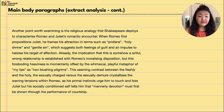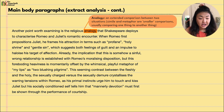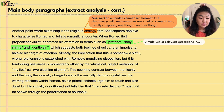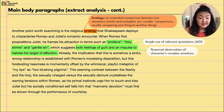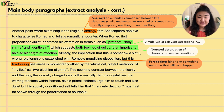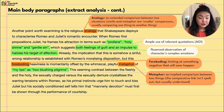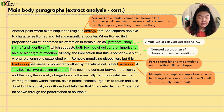The next paragraph examines the religious analogy Shakespeare deploys to characterize Romeo and Juliet's romantic encounter. When Romeo first propositions Juliet, he frames his attraction in terms such as 'profane,' 'holy shrine,' and 'gentle sin,' which suggests both his feelings of guilt and an impulse to halo-ize his object of affection — to turn her into a saintly figure. The implication that this is somehow a sinful relationship is established, but this foreboding heaviness is momentarily offset by the whimsical, playful metaphor of 'my lips, two blushing pilgrims.'